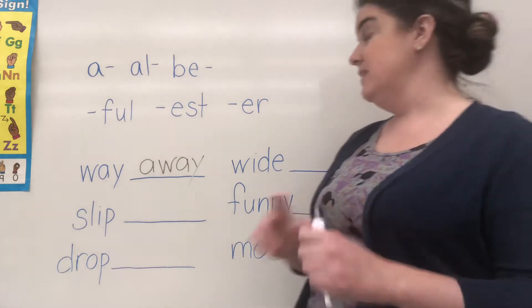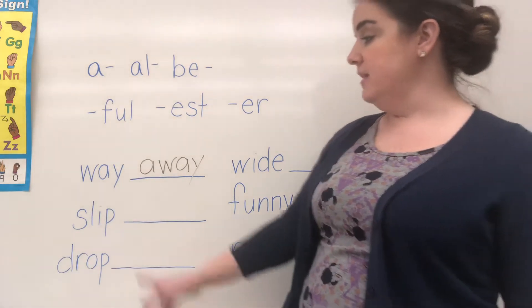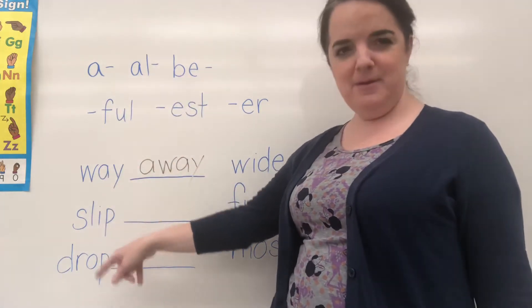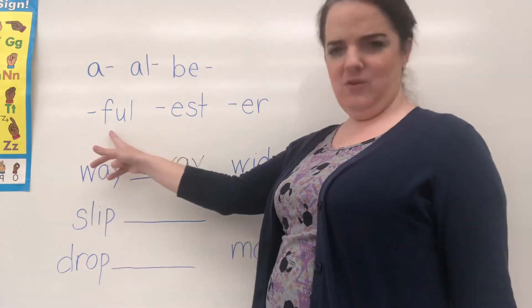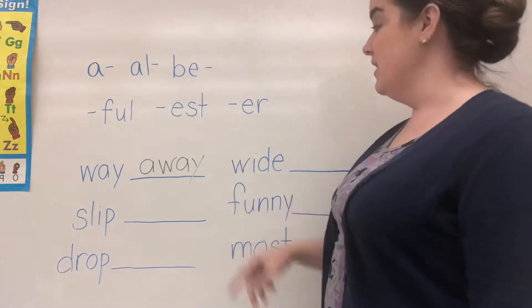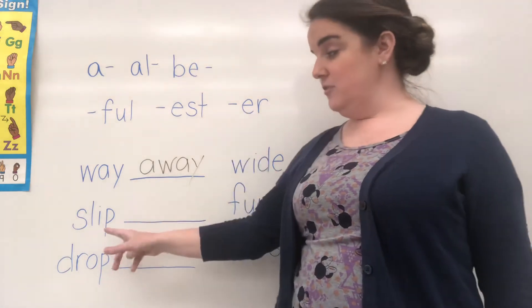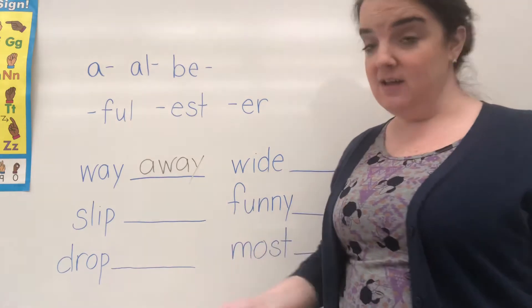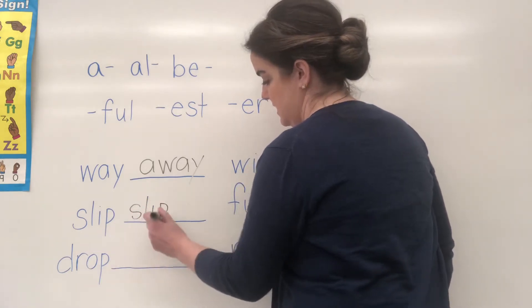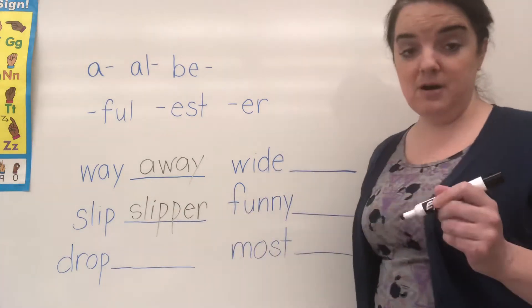All right. Let's go to our next one. We have slip. Let's try a prefix. A-slip? All-slip? Be-slip? No. What about slipful, slip-est? No. Slipper—oh yeah, E-R. Now, if you notice, this word ends with a consonant, a P. So to add a suffix to a word that ends with a consonant, we need to double the consonant and add the suffix. So S-L-I-P-P-E-R to make slipper.